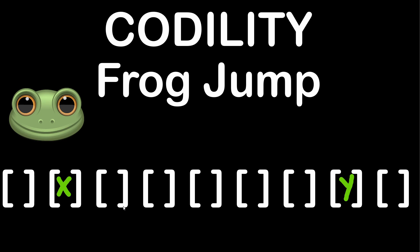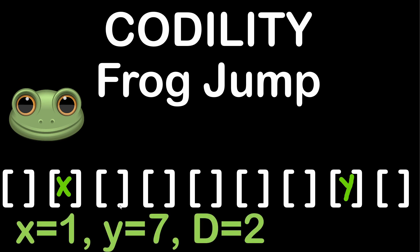And you are also provided the number of positions the frog will skip with each jump. For example, if x is equal to 1 and y is equal to 2, and d, which is the number of positions to be skipped with each jump, is equal to 2,